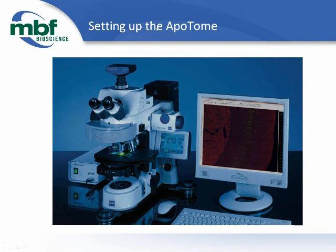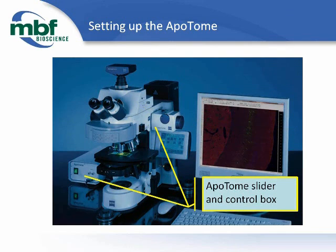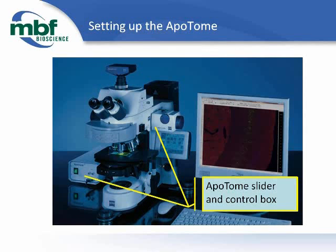Now we will present the main components of an Apatome system from MBF Bioscience. The Apatome is designed as an add-on to the Axio-Imager and Axio-Observer lines of microscopes from Zeiss. The Apatome itself is comprised of two main components: a control box, visible on the left next to the microscope stand, which connects to either your computer or directly to the microscope. Also the Apatome slider, which connects to the control box and fits in the field diaphragm slot of the microscope.